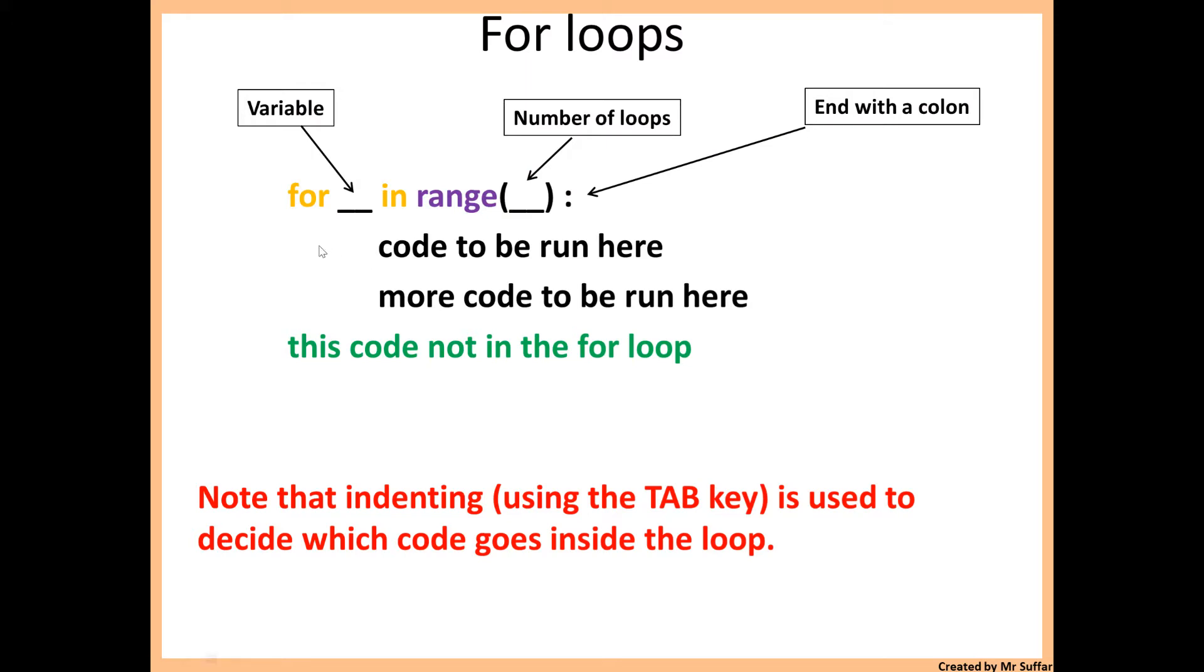This is the structure of a for loop. In Python you start with for and then you need to put a variable. This could be anything, it could be x, i, count, whatever you want. It's just a variable. Normally people will just use x or i because it's easier to remember.